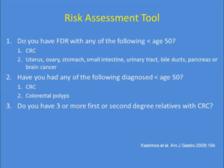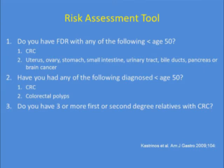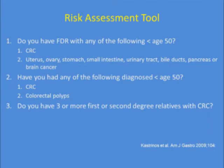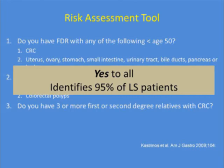Another tool is the three-question risk assessment tool — practical for use in your endoscopy suite. It asks: early age of onset of colorectal cancer or extracolonic cancers; personal history of cancer or numerous polyps; and whether the patient has multiple first- or second-degree relatives with colorectal cancer. If individuals say yes to all questions, 95% of Lynch syndrome patients are identified.